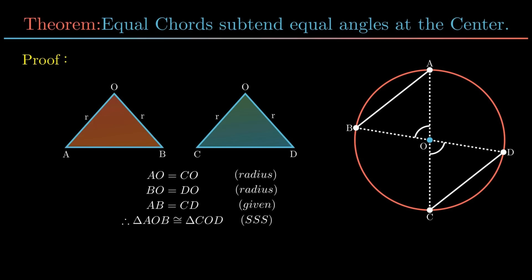By corresponding parts of congruent triangles, angle AOB is equal to angle COD. Hence the theorem is proved.